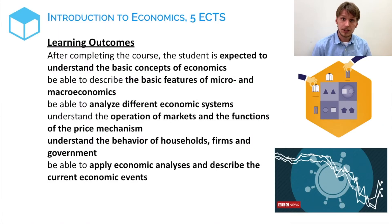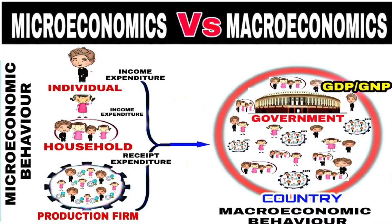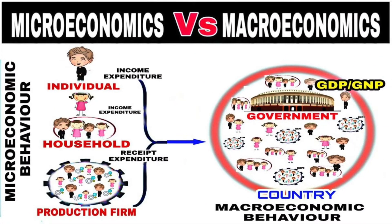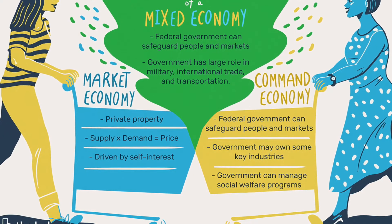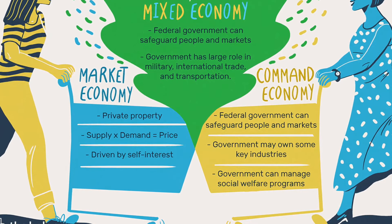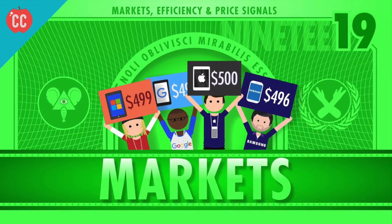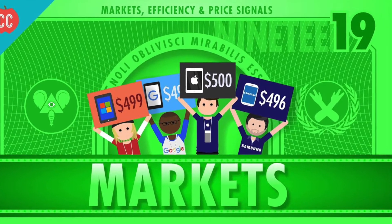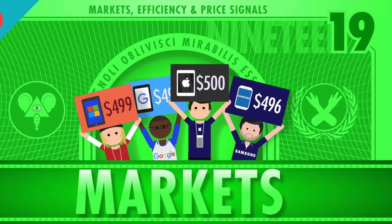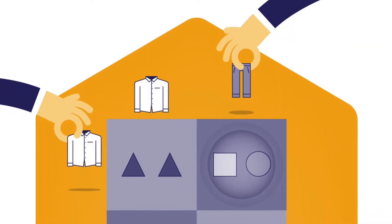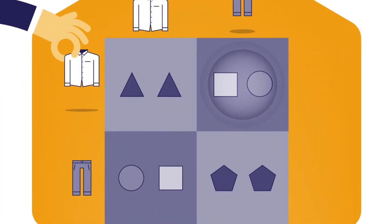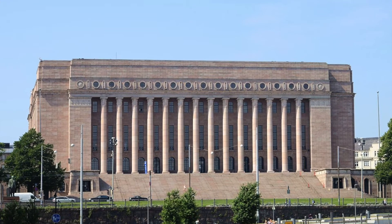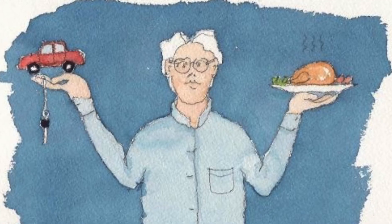After completing this course, you are expected to understand the basic concepts of economics and the basic features of micro- and macroeconomics. You are expected to be able to analyze different economic systems, and to understand the operation of markets and the price mechanism. In addition, you are expected to understand the behavior of households, firms, the government, and individuals.